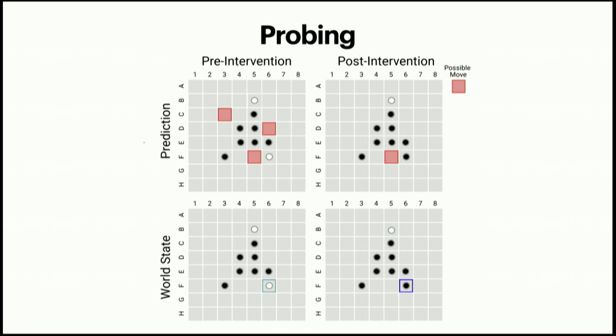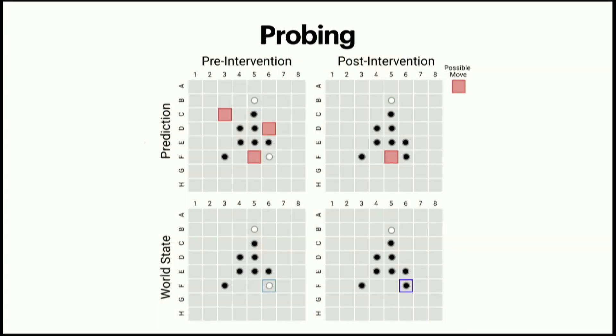Going beyond this, we used these representations found through probing to take a model's layer activations and reflect a different board state, then see the model understand what this new board state required. On the lower portion of the chart, we see the world state — what the actual board looks like. Highlighted in teal, there is a white piece.